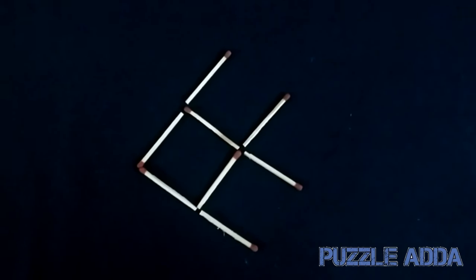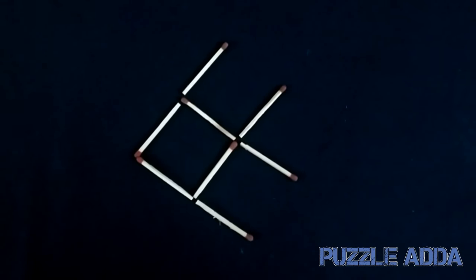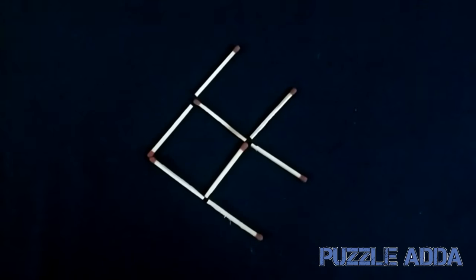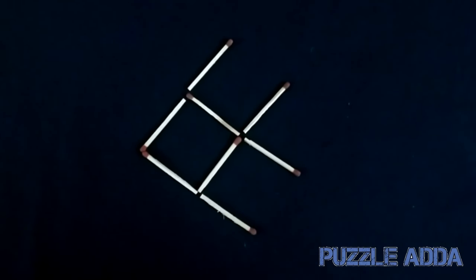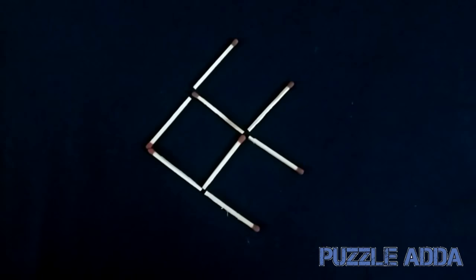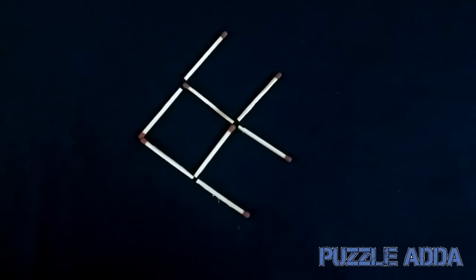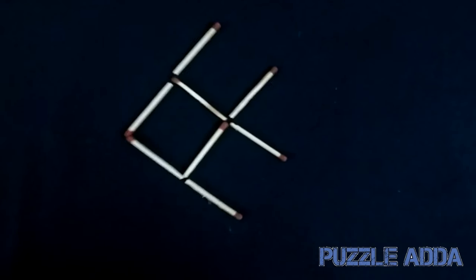So the puzzle is you can move only 3 matchsticks to move the fish to the right side. Currently the fish is facing to the left side, if you can see, then you have to move only 3 matchsticks so that the fish is facing to the right side.